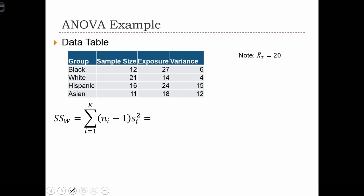Next, we're going to calculate the within-group sum of squares. Here we are going to be multiplying the group sample size minus 1 times the group variance. And remember, here we had the variances and here we have the sample sizes. So this is really easy to do. We just take 11 times 6 plus 20 times 4 plus 15 times 15 plus 10 times 12 and that equals 491.